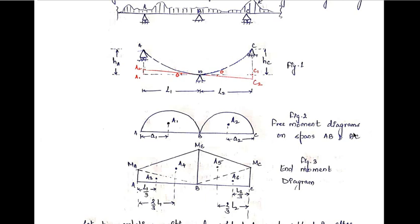The free moment diagram is the bending moment diagram obtained by considering the beam as simply supported and applying the same external load. Suppose the area of the free moment diagram between A and B is capital A1, and the distance of its centroid from the left support is small a1. The distance of the centroid of A2 from support C is small a2.